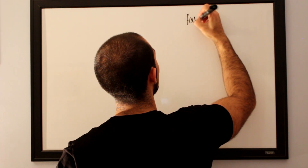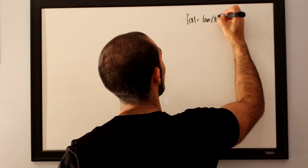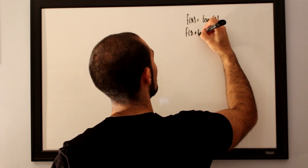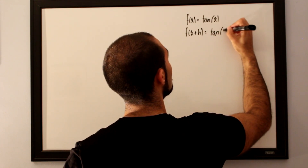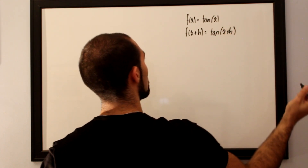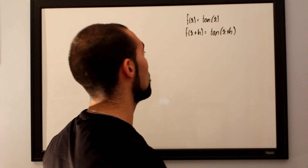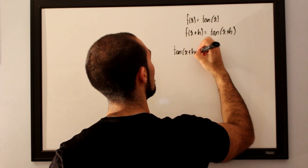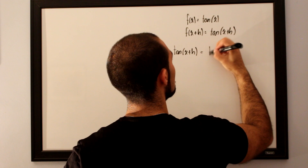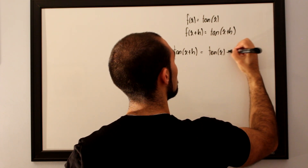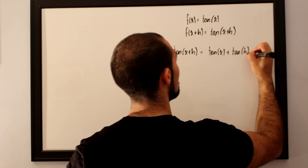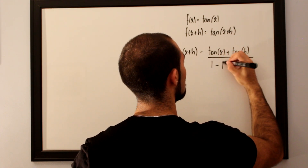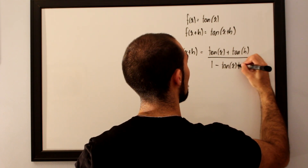Our final example for today is evaluating the derivative of tangent of x. So our f(x) will be tangent of x, and our f(x+h) will be tangent of x plus h. Addition of tangents is no easier than sine or cosine, so tangent of x plus h will actually be equal to tangent of x plus tangent of h, divided by 1 minus tangent x multiplied by tangent h.